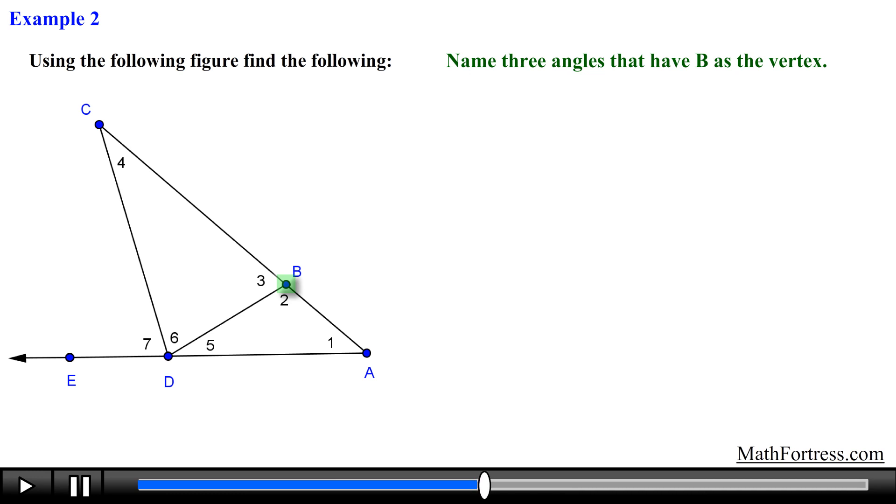The first of these angles is angle 3. Notice that we can also name this angle as angle DBC or angle CBD. Another angle that contains point B as the vertex is angle 2. We can also name this angle as angle DBA or angle ABD. It seems that these are all the angles but the problem is asking us to name three angles. We already found two angles, now it's just a matter of finding one more angle that has B as the vertex.